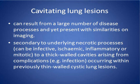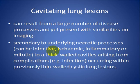My topic today is about cavitating lung lesions. These lung lesions can be a result of a number of disease processes and have some similarities. They can result from a neoplastic cause, an infective cause, an ischemic cause, or an inflammatory cause. These cavitary regions can be thick-walled — more than three millimeters — as seen in infection and tumor, or thin-walled, as in cystic lung disease.